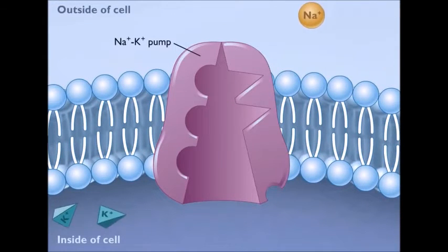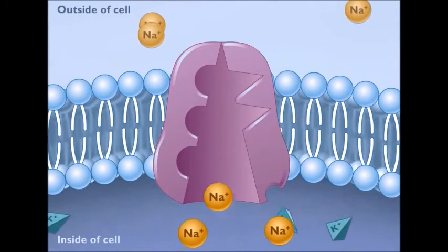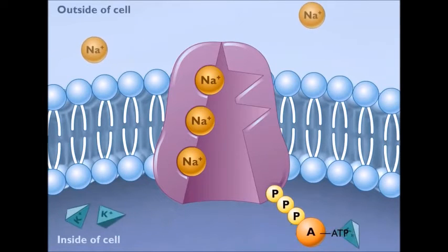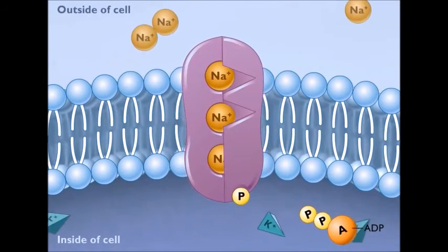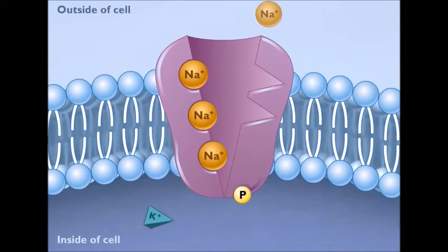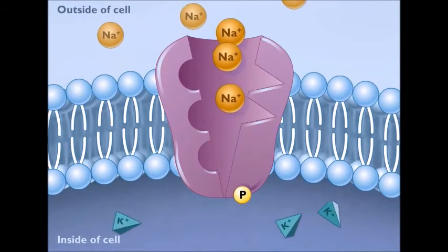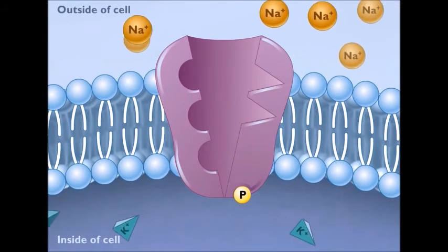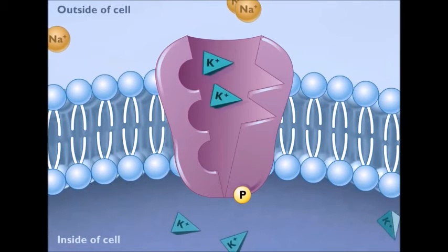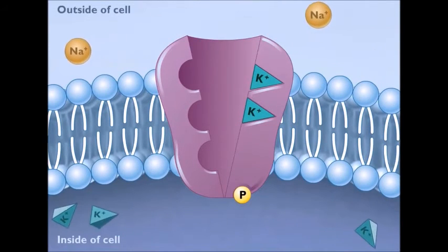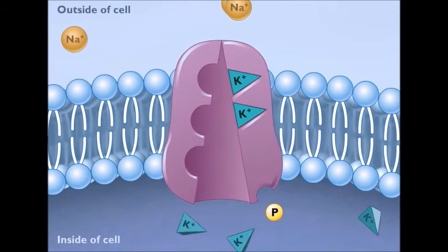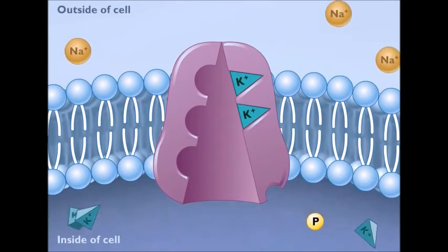Like facilitated diffusion, active transport depends on integral membrane proteins that selectively bind a particular solute and move it across the membrane in a process driven by changes in the protein's conformation. Unlike facilitated diffusion, however, movement of a solute against a gradient requires the coupled input of energy. The endergonic movement of ions or other solutes against a concentration gradient is coupled to an exergonic process, such as the hydrolysis of ATP, the absorbance of light, the transport of electrons, or the flow of other substances down their gradients. Proteins that carry out active transport are often referred to as pumps.